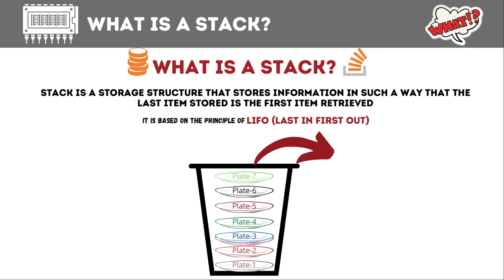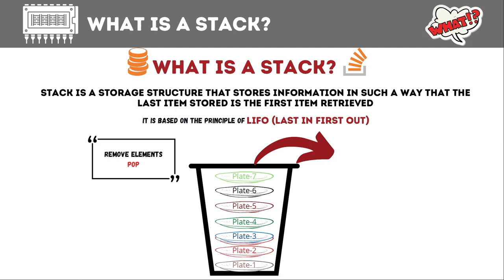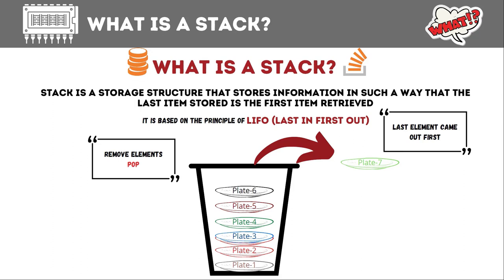Now if we want to remove these plates from the bucket, we have to remove them in reverse order. The structure of the bucket means we cannot retrieve plate number one until we remove all the plates above it. Removal of an item from a stack is called a pop operation. When we pop item number seven — the last item stored — it is the first to come out. That is the LIFO principle: last in, first out.